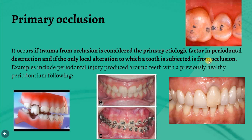A second cause of primary trauma is insertion of a prosthetic replacement that creates excessive force on the abutment and antagonist teeth. Thirdly, drifting movement or extrusion of teeth into spaces created by unreplaced missing teeth. Fourthly, orthodontic movement of teeth into functionally unacceptable positions — for example, resulting in an open bite, which represents a failed outcome requiring treatment.